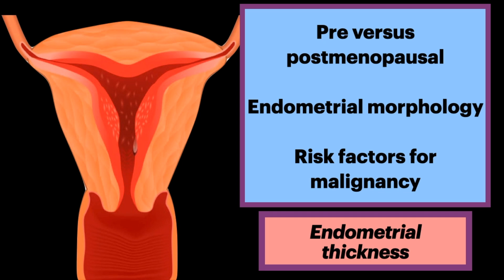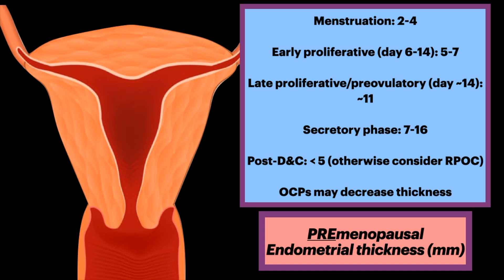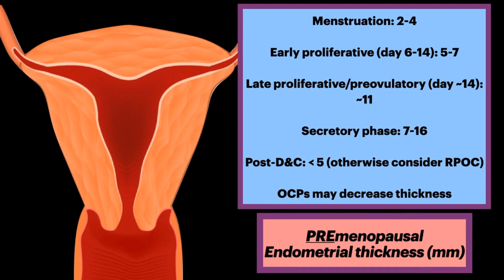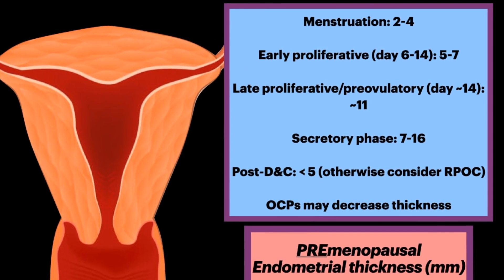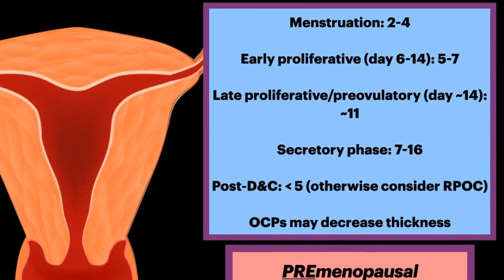Endometrial thickness depends on pre- versus postmenopausal state. While quantitative assessment is important, endometrial morphology and the presence of other risk factors for malignancy should be taken into account. Premenopausal endometrial thickness varies by menstrual phase: 2–4 mm during menstruation, 5–7 mm during the early proliferative phase (day 6–14), 11 mm for late proliferative or pre-ovulatory phase, and 7–16 mm for the secretory phase. After dilatation and curettage, thickness should be less than 5 mm, otherwise one would have to consider retained products of conception. This is only a guide and is variable from individual to individual. OCPs (oral contraceptive pills) may also affect thickness.